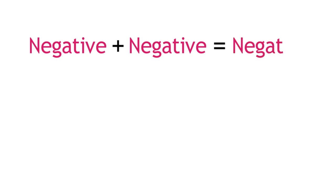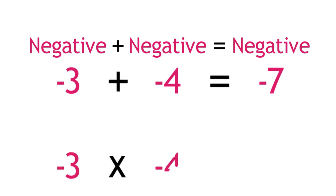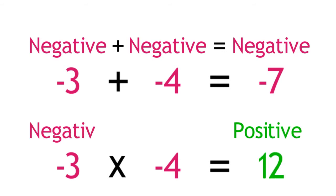Most students feel comfortable with the idea that a negative plus a negative equals a negative. For example, if I owe one friend $3 and I owe another friend $4, then negative 3 plus negative 4 equals negative 7. I owe a total of $7, negative 7. But why, for example, does negative 3 times negative 4 equal positive 12? Why do two negatives cancel out to equal a positive?